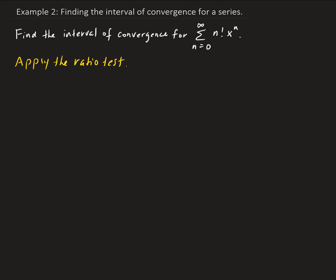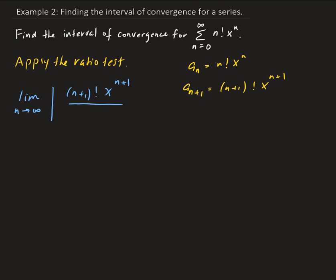To do that we need to take the limit of the ratio of the (n+1)th term and the nth term. In this case, the nth term is n factorial times x to the n, and the (n+1)th term is (n+1) factorial times x to the n plus one.